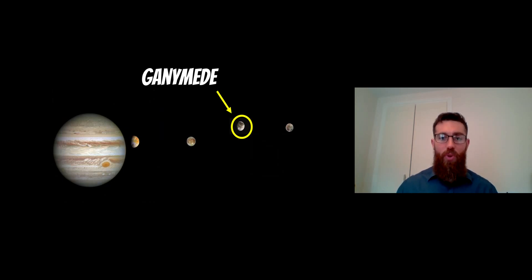The largest moon in the solar system is Ganymede. This moon is one of the four Galilean moons of Jupiter. Starting from the one closest to Jupiter, you've got Io, Europa, Ganymede, and Callisto. They're all very large moons, but Ganymede is actually the largest in the solar system.